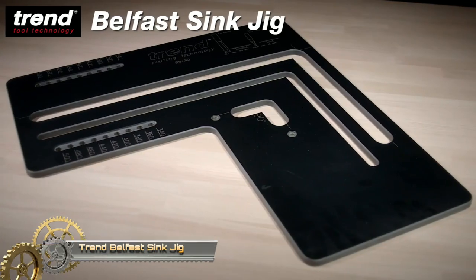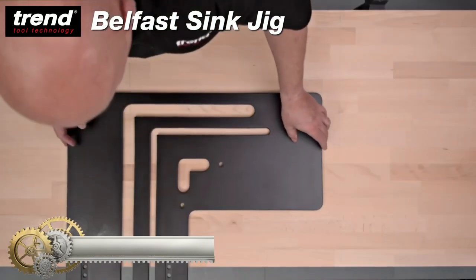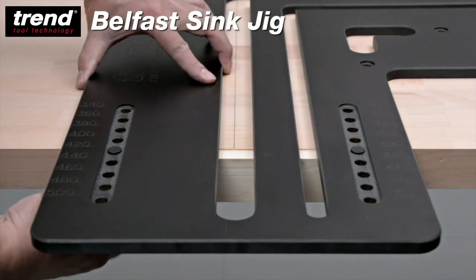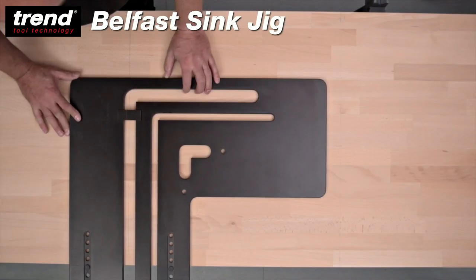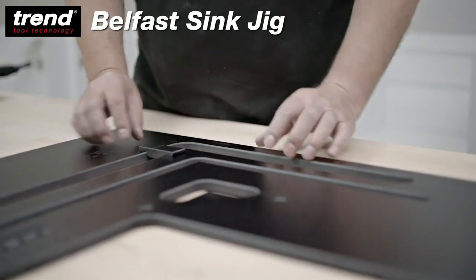Trend Belfast Sink Jig is made from 12mm of hard-wearing, CNC-machined compact-grade laminate. It will also allow the drip channel groove to be routed on the underside of the worktop.